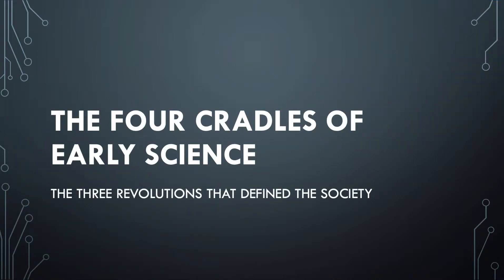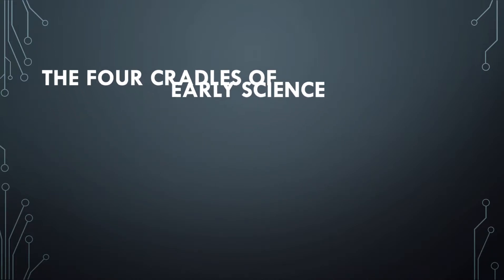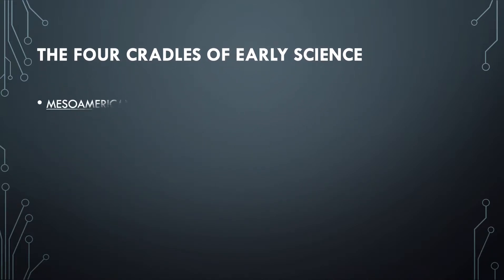The four cradles of early science are places around the world. We have talked about the United Kingdom when we covered Charles Darwin in our first video. Now we're going to move on to the four parts of the world: the Mesoamerican, the Middle East, Asia, and the African.